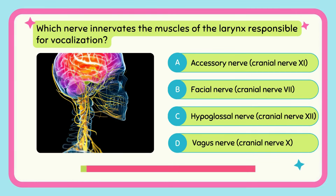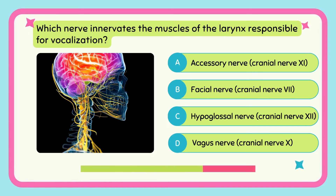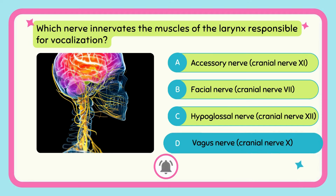Which nerve innervates the muscles of the larynx responsible for vocalization? Vagus nerve, cranial nerve 10.